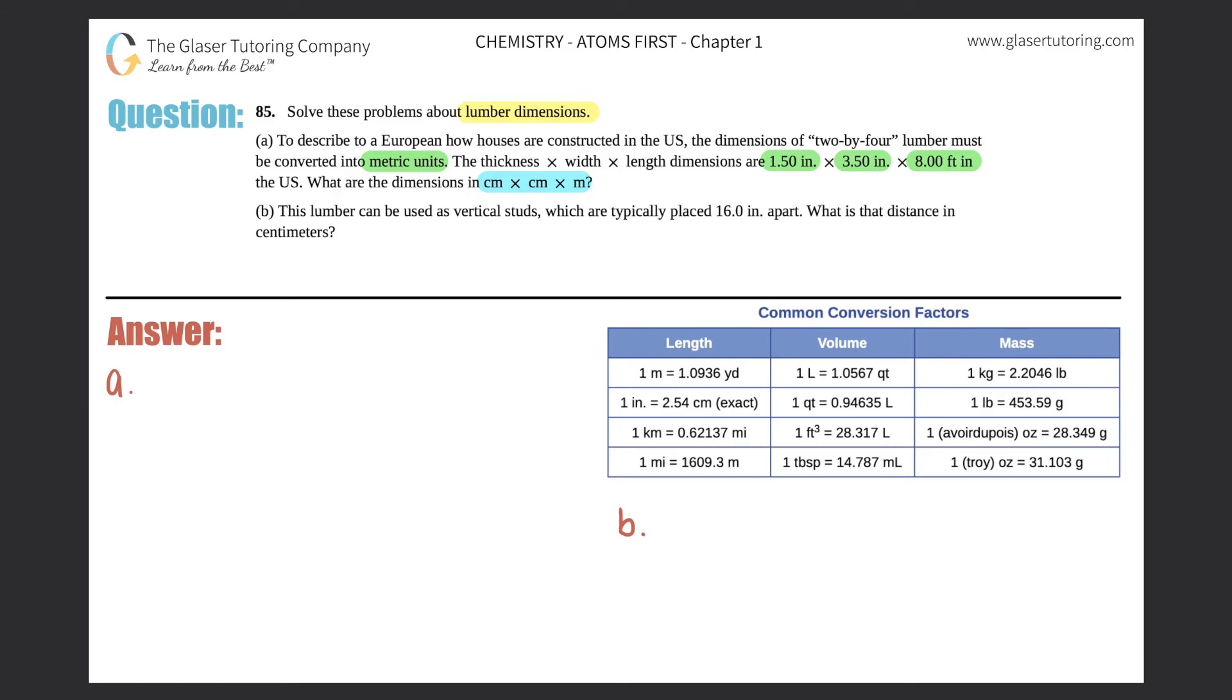What are these dimensions in centimeter times centimeter times meter? Okay, so it looks like it's just a simple conversion for three of them, right? They want centimeter by centimeter by meter. So this first inch has to be converted to centimeter, this second inch has to be converted to centimeter, and this feet has to be converted into meter.